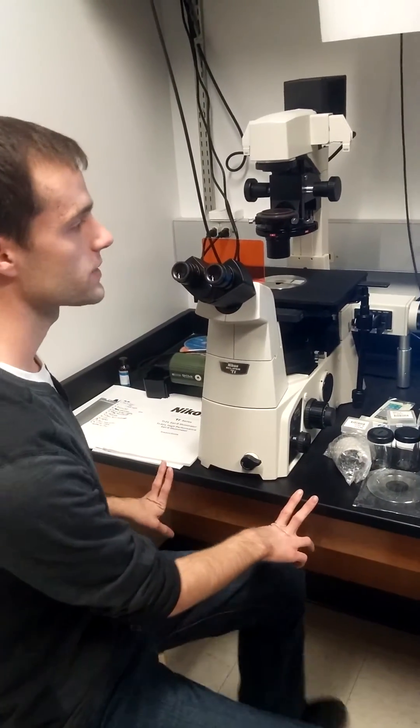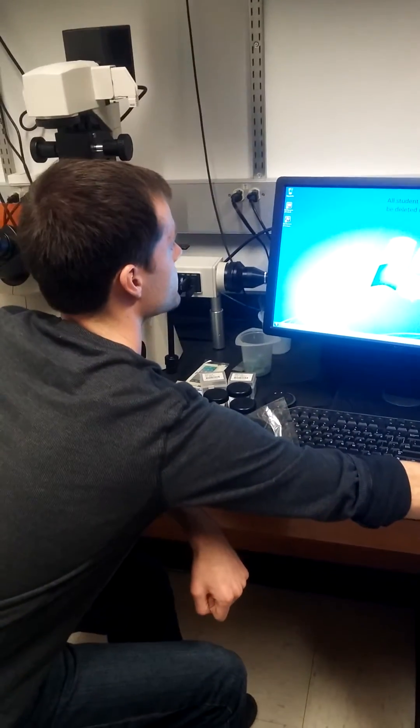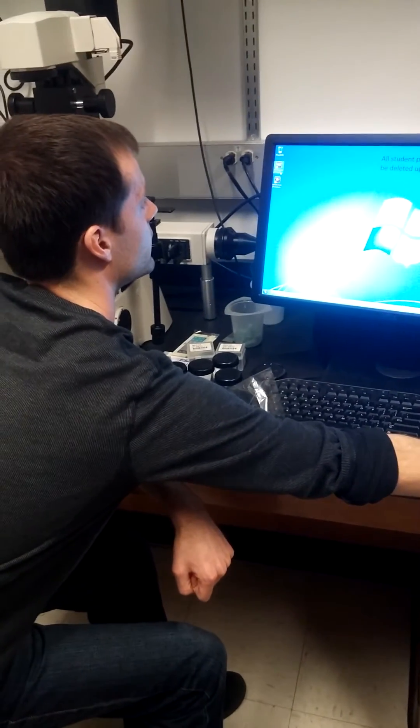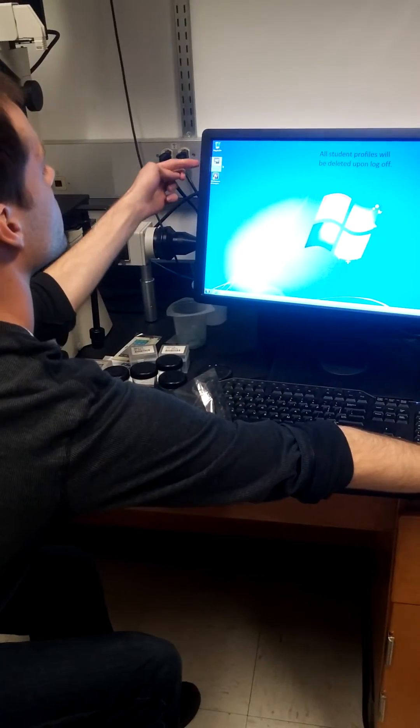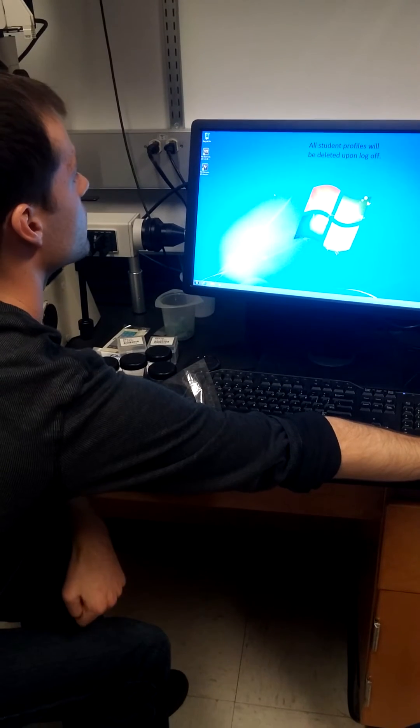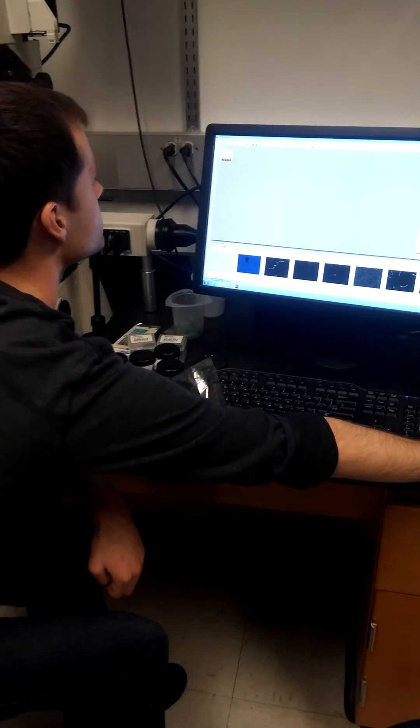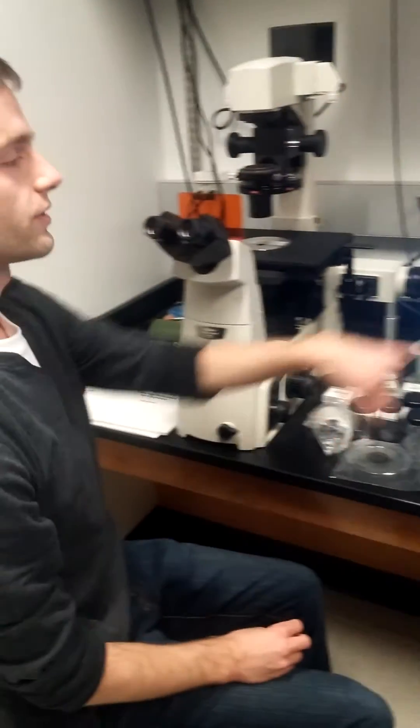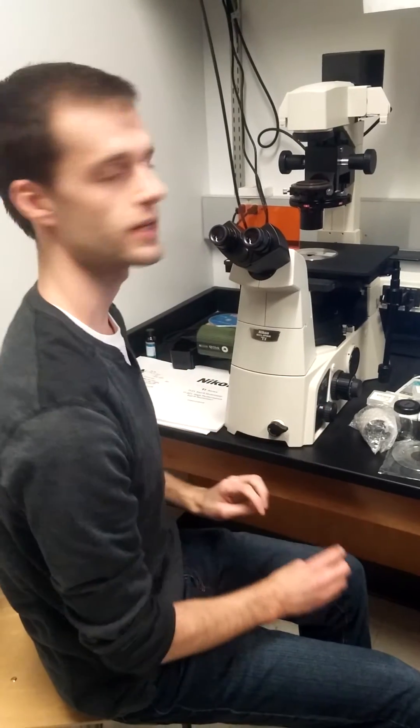So now let's open up the software so we can take an image. So I'm going to go to my desktop and click on the NIS Elements at the top. Right here. Let it load. If the camera's not on, you'll get an error message there. So make sure that you have everything set up.